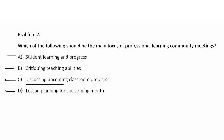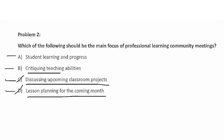Options C and D are both things that teachers have team meetings for — they meet with their grade-level team to discuss upcoming projects and lessons, so the whole school community doesn't need to meet about those. Critiquing teaching abilities is something that comes from an administrator after observing a teacher in a one-on-one meeting. So the best answer is A: Student learning and progress, because that provides an opportunity for teachers to discuss, collaborate, and review data on student progress as a whole school or community.